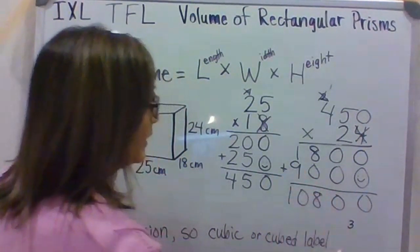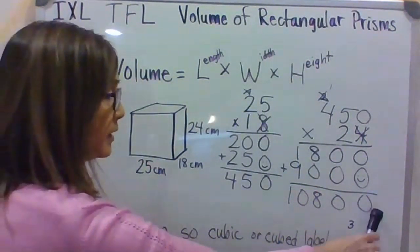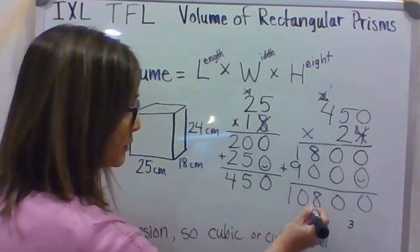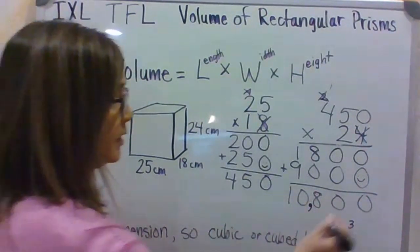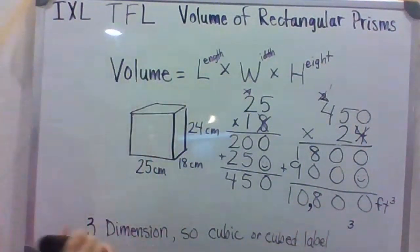9 plus 1 is 10. IXL is very fussy. You have to insert the comma or they will mark it as wrong. So, start all the way back here. Jump in three place values. Insert your comma. Put on your label or they'll have it for you. And we would say it's cubed.